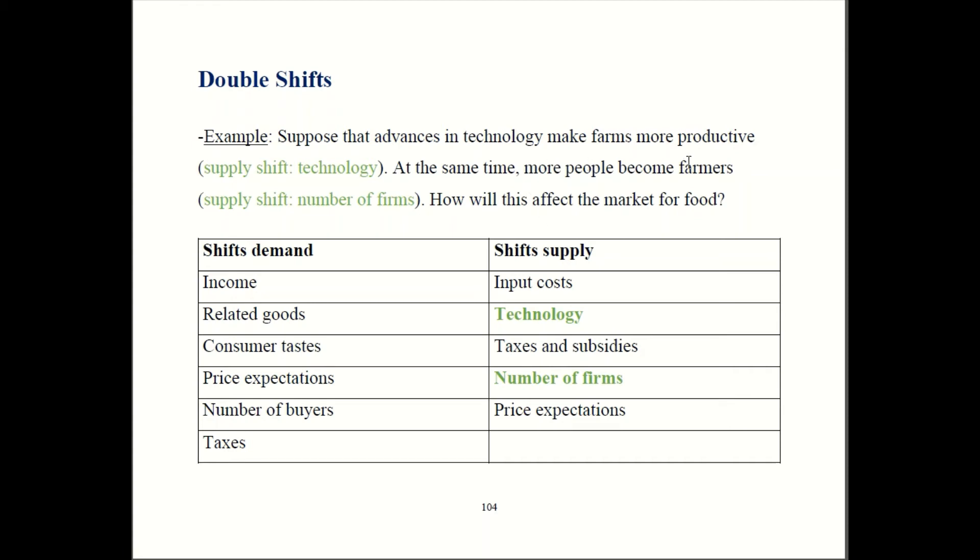More people become farmers. Farmers are on the supply side of the food market. So, that means it's going to be a larger number of firms producing food. Number of firms is also on the supply side. Therefore, we have two different factors shifting supply at the same time.